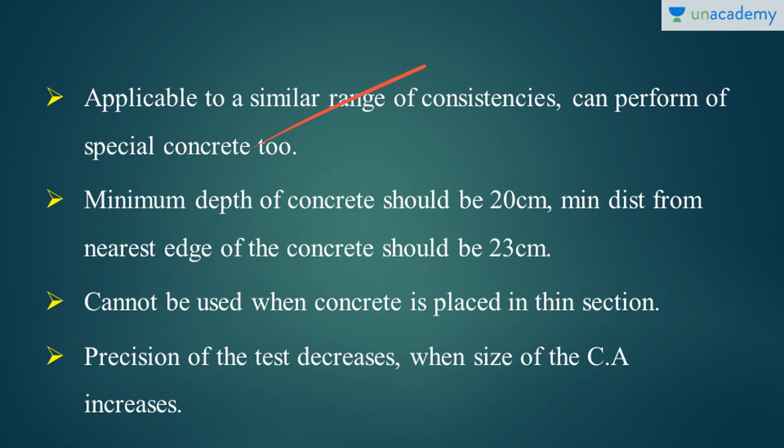Let's look at some disadvantages of this test. One of the major drawbacks of the Kelly Ball test is that you need a huge amount of concrete for it. The minimum depth of the concrete should be 20 centimeters, that is 200 mm. Also, the minimum distance from the nearest edge of the concrete should be 23 centimeters. This creates impractical situations in real-life conditions — if the concrete is used in thin sections, this test cannot be performed.